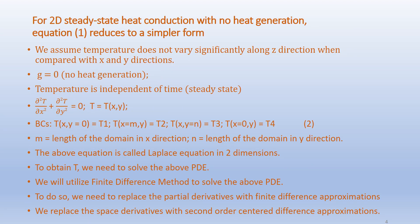For 2D steady-state heat conduction with no heat generation, equation 1 reduces to a simpler form. We assume that the temperature does not vary significantly along the z direction compared with x and y directions. The heat generation term G equals zero, and temperature is independent of time — that is, we assume a steady-state condition. Accordingly, equation 1 becomes ∂²T/∂x² + ∂²T/∂y² = 0, where T is a function of x and y.